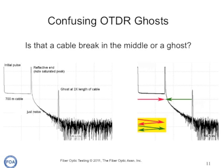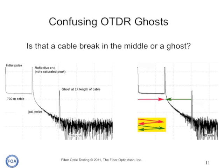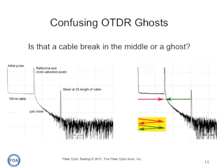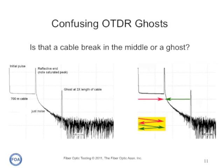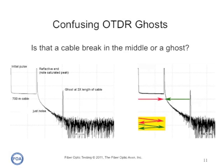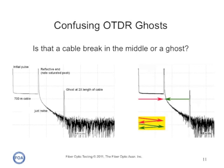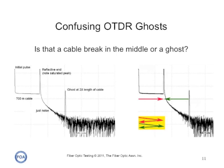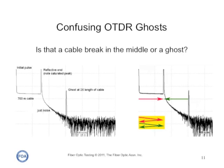Highly reflective events cause another problem in OTDR traces called ghosts. If the light is highly reflective, it can bounce back and forth between connectors and create a secondary reflectance peak at exactly twice the distance from the first peak. If you see a suspicious peak that looks twice as far away, check the distances. If it is exactly double, you know you have a problem. But obviously, it also helps to know the length of the cable you're testing, because then the ghost becomes obvious much more easily.